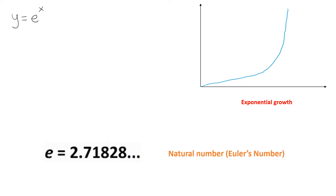So what is the number e? It is a special irrational number, just like pi, and it is called the natural number or Euler's number. Just like pi having an approximate value, e also has a rational approximation of 2.718.